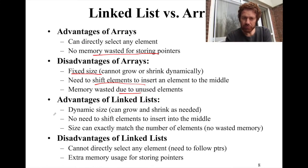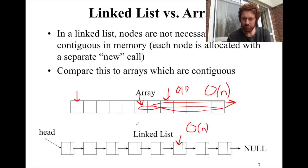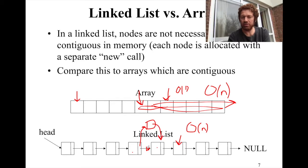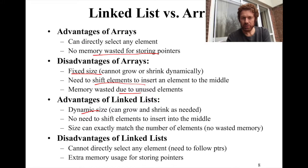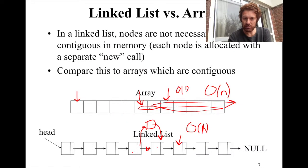Also, if you want to insert something to the middle of an array, you need to shift all the other elements one position, which takes O(n) cost. Similarly for deletion. A linked list doesn't suffer from intermediate deletion or insertion — to insert something between two nodes you create that node, set its pointer to the next node, update the previous node's pointer to this new node, and that's it. It takes O(1) time. Also, the dynamic size of a linked list means it can grow and shrink as needed.